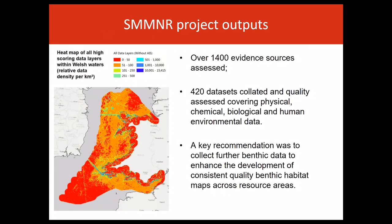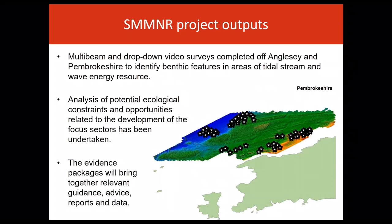The project has assessed over 1,400 evidence sources and 420 datasets have been collated and quality assessed, covering physical, chemical, biological and human environment data. Following collation and review, recommendations were made on how evidence and data gaps could be addressed, including through targeted studies. A key recommendation was to collect further benthic data to enhance the development of consistent quality benthic habitat maps across resource areas. Multi-beam and drop-down video surveys have been completed off Anglesey and Pembrokeshire to identify benthic features in areas of tidal stream and wave energy resource.